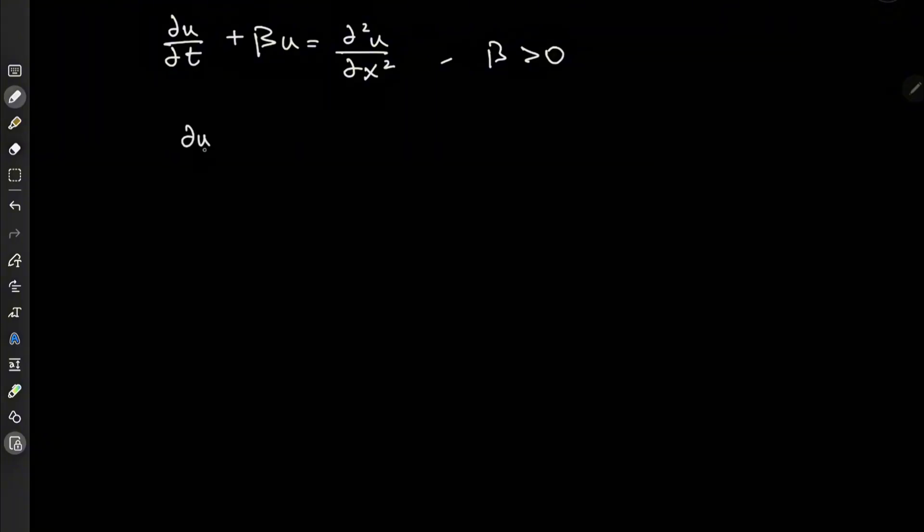Well, if I isolate the partial u over partial t term, then I have this equal to partial squared u over partial x squared minus beta times u. So this would represent a heat loss term.